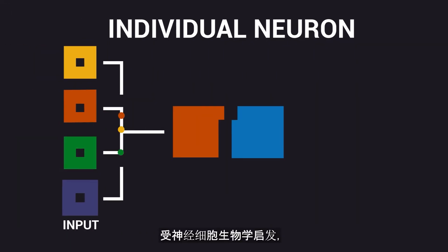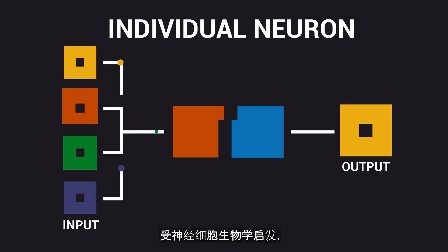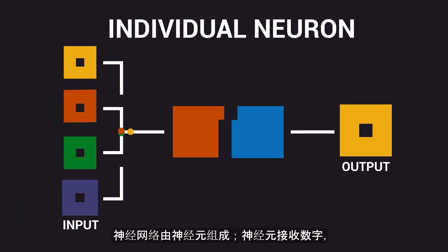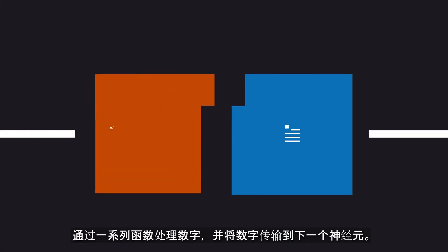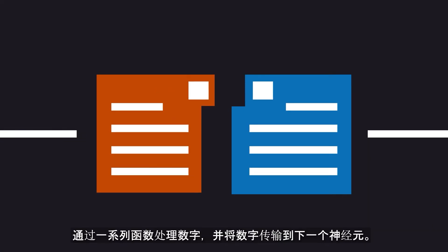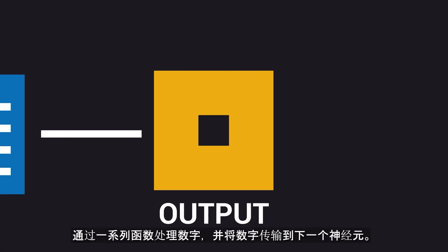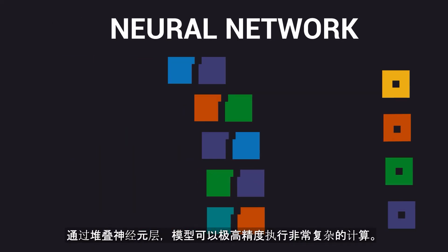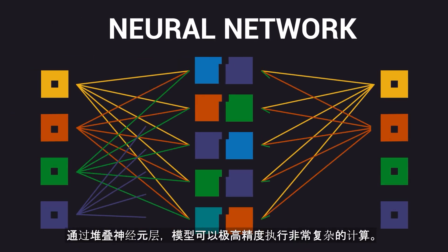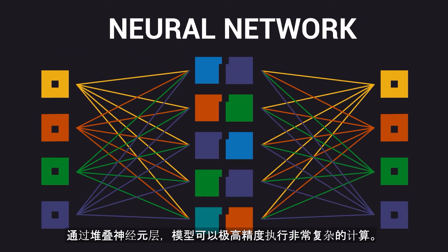Inspired by the biology of nerve cells, neural networks consist of neurons that receive an input of numbers, process this input through a set of functions, and transmit it to the next neuron. By stacking layers of neurons together, this model can perform very complex computations with very high accuracy.